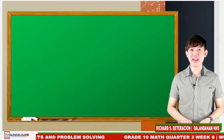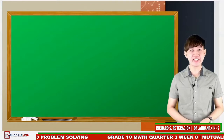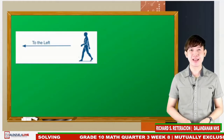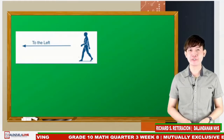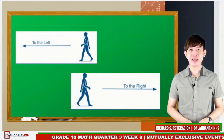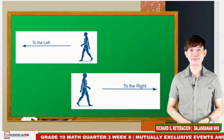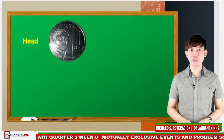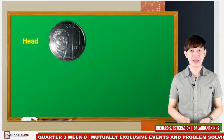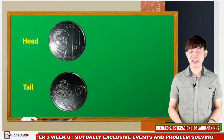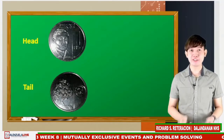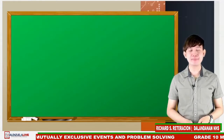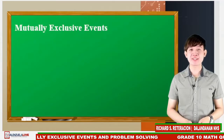Let us explore and analyze some situations or events in our life that you cannot do both and happen at the same time. Like, when you are turning to the left and turning to the right, can you do both at the same time? Probably not. And when you toss a 1 peso coin, can you get a head and a tail at the same time? Absolutely not. This kind of events that cannot happen at the same time is called mutually exclusive events.